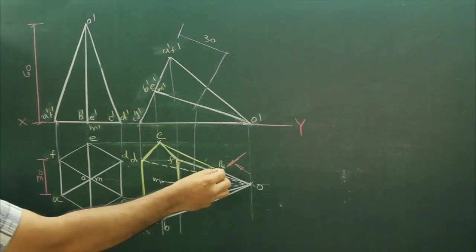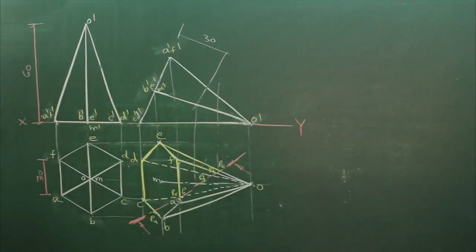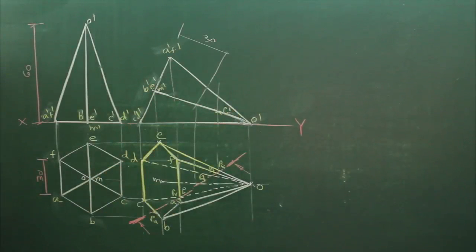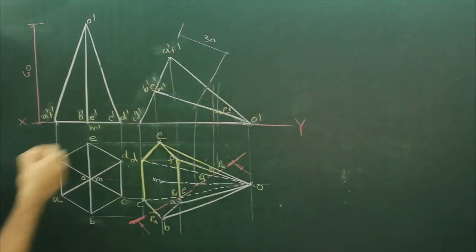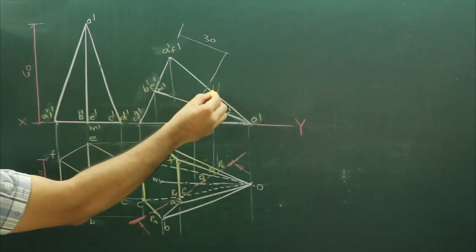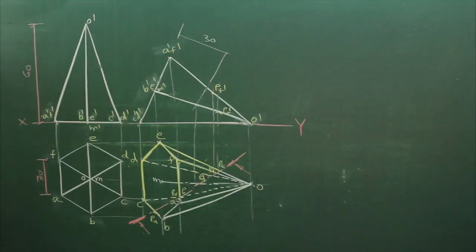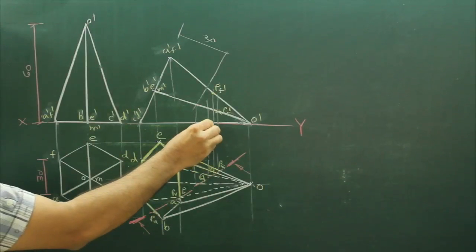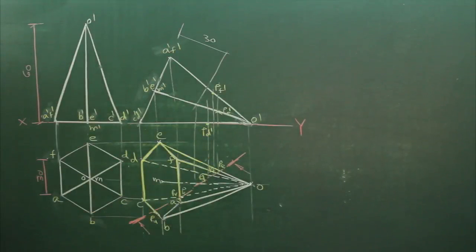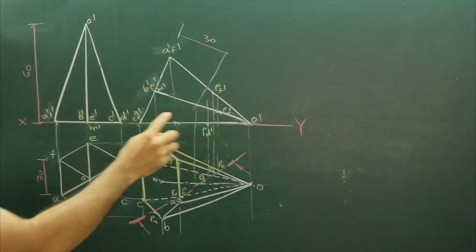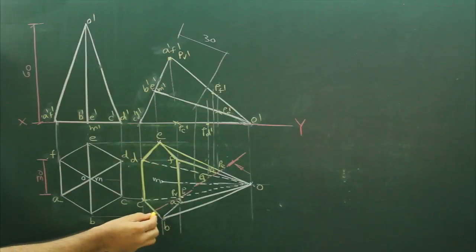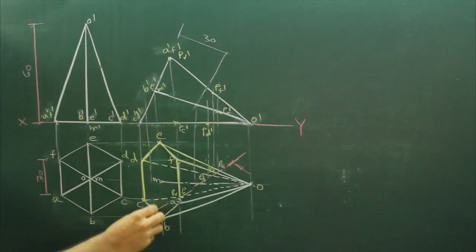Now we will take all these points up. So wherever this PE will cut with O'E', that will be PE'. I will project PF as O'F', that is PF'. Same way PD. Wherever it will cut, that is PD'. Then I will extend this straight from here. Wherever it will cut, that is PU'. Then TC. Wherever it will cut, O'C', that is PC'. TV'. I will extend this straight from here.